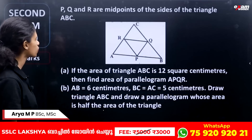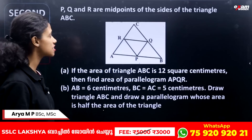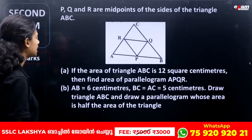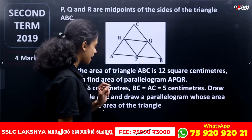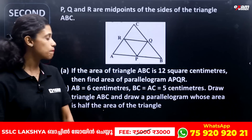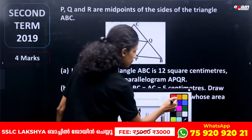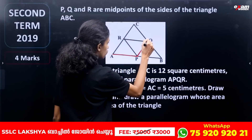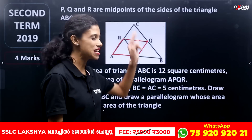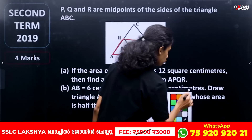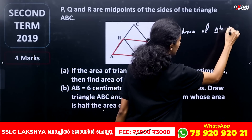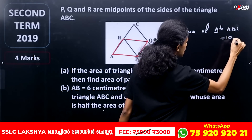The first question: P, Q, and R are midpoints of the sides of triangle ABC. If the area of triangle ABC is 12 square centimeters, you will find the area of the parallelogram BPQR.